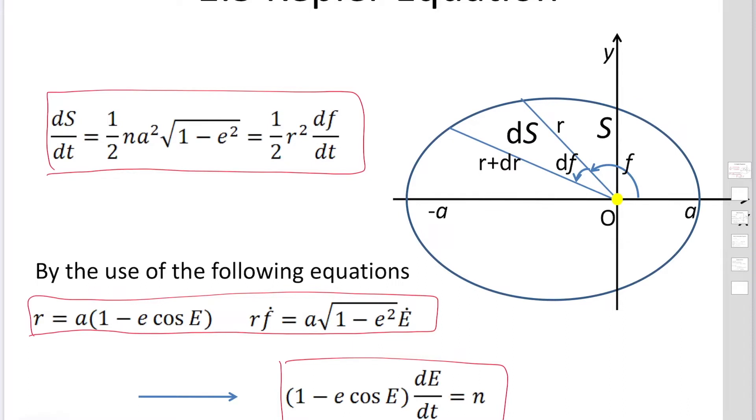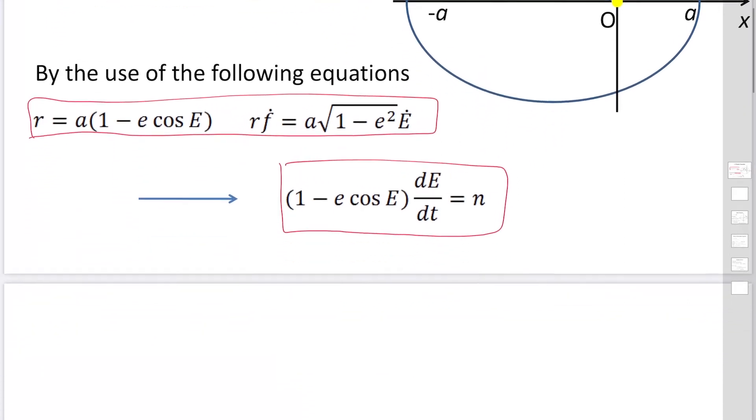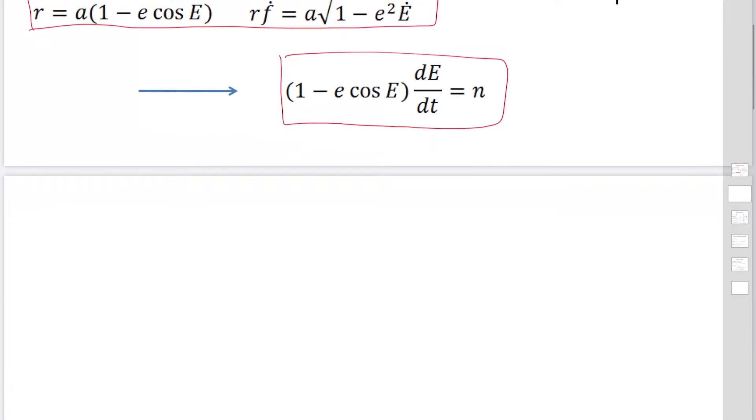We call this Kepler equation. So we are going to derive this formula. We start with the equations of 1 over 2, Na squared, 1 minus E squared, equal to 1 over 2, R squared, Df Dt. Actually, this is equal to Ds Dt.